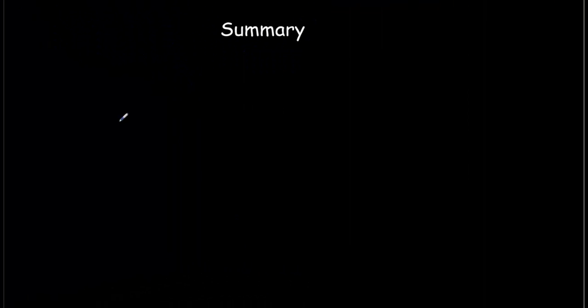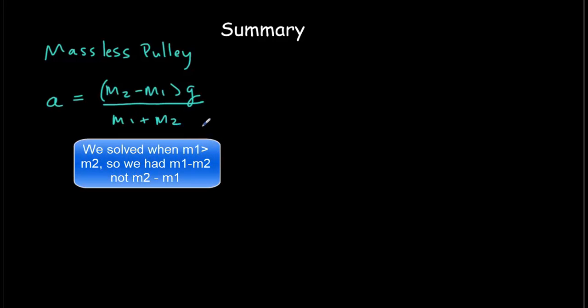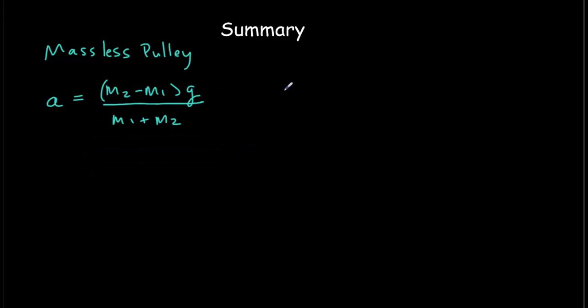Let's summarize the big ideas from the video. So we first looked at a massless pulley, Atwood's machine, and we found that the acceleration was equal to M2 minus M1g all over M1 plus M2. So it's equal to the net force on the system divided by the inertia, the total mass of the system. But if you had, let's call it a mass full pulley, where the system has more inertia because of the mass of that rotating pulley, then you get this expression for the acceleration.